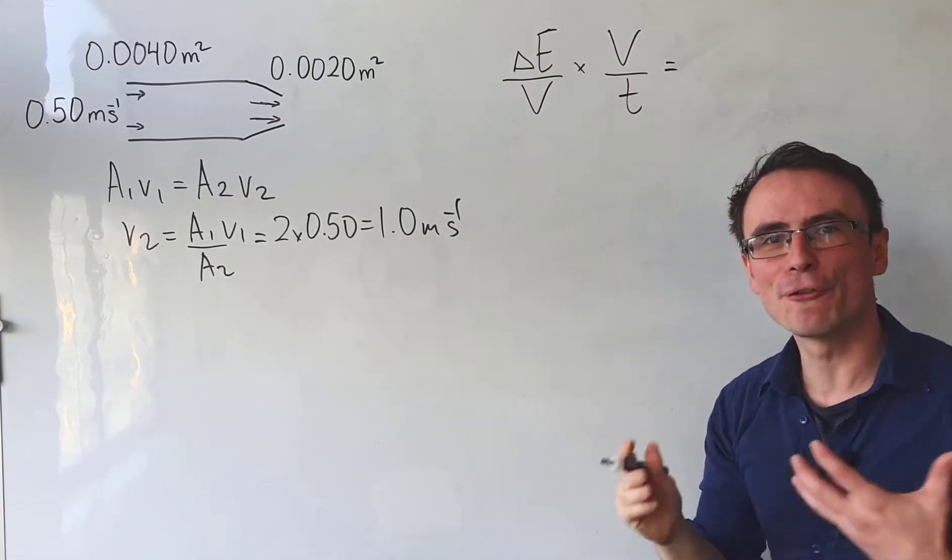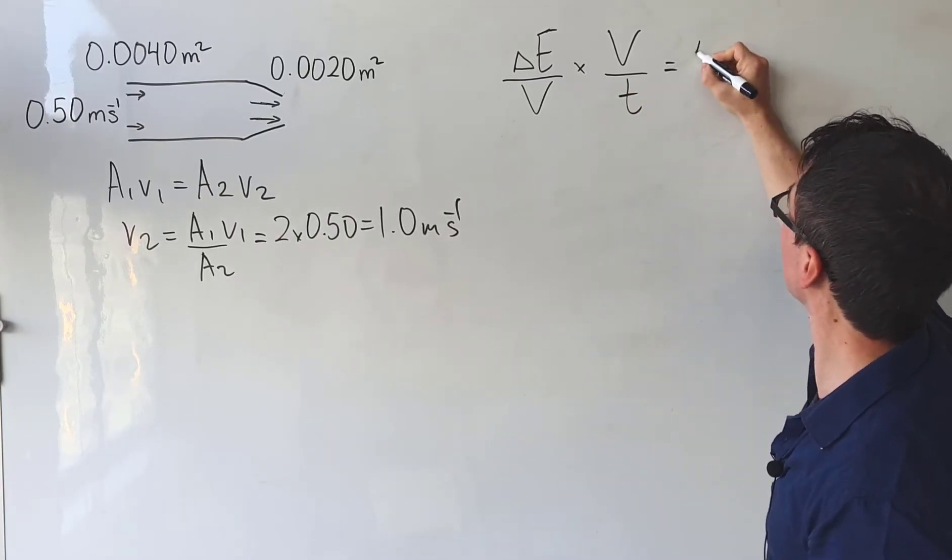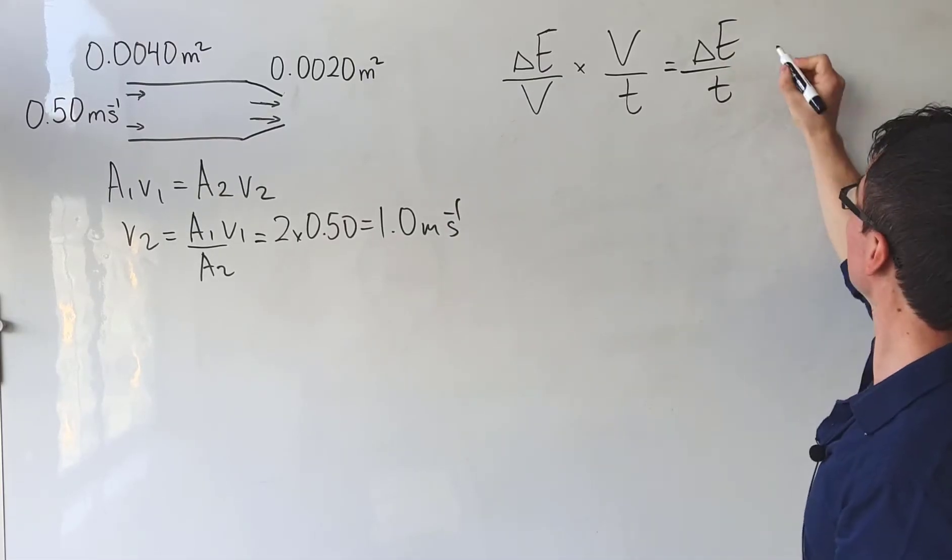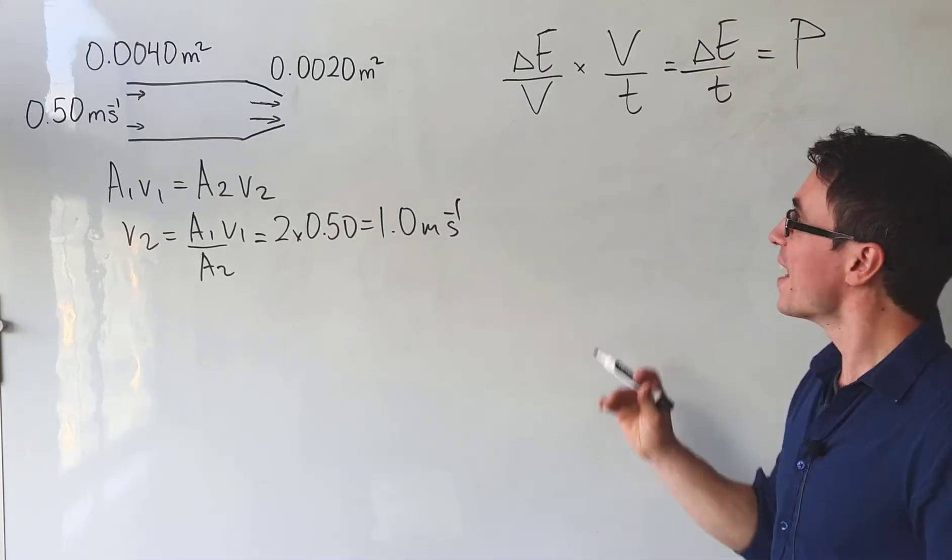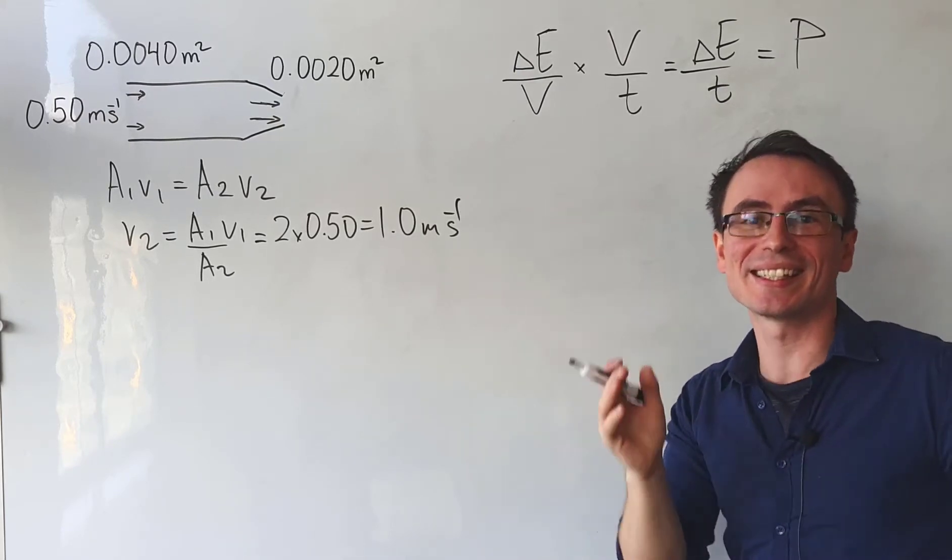What if I multiply that by the change of energy per unit volume? Then the Vs will cancel out, and what I'm going to be left with is simply the change of energy per time, which is indeed the power. Now I'm going to calculate each of those quantities separately.